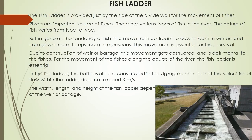The fish ladder is provided just by the side of the divide wall for the movement of fishes. Rivers are an important source of fish. The tendency of fish is generally to move from upstream to downstream in winters and from downstream to upstream in monsoons. This movement is essential for their survival. Due to construction of a weir or barrage, this movement gets obstructed, which is detrimental to the fishes. Therefore, the fish ladder is essential. In the fish ladder, baffle walls are constructed in a zigzag manner so that the velocity of flow within the ladder does not exceed 3 meters per second. The width, length, and height of the fish ladder depend on the nature of the river and the type of weir or barrage.